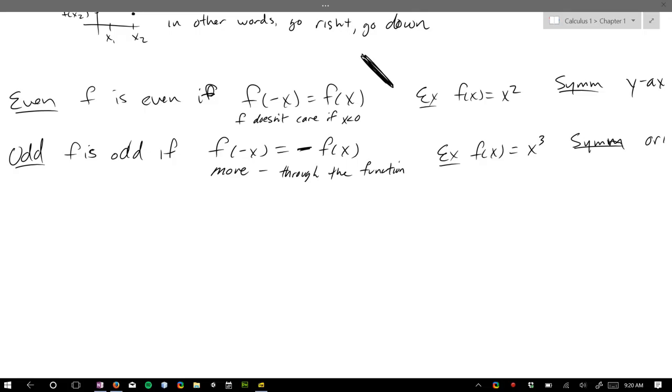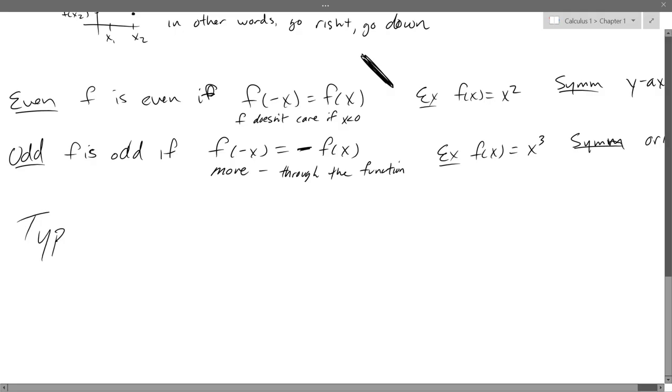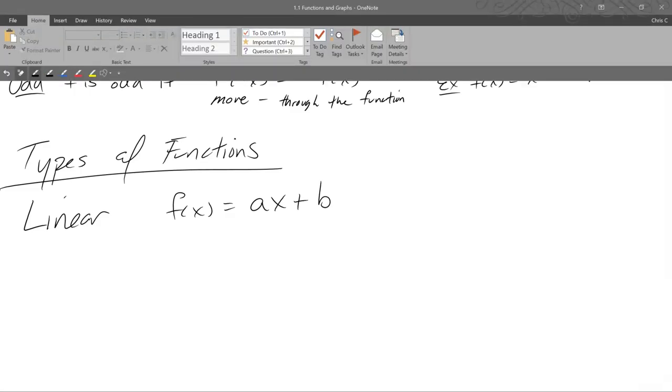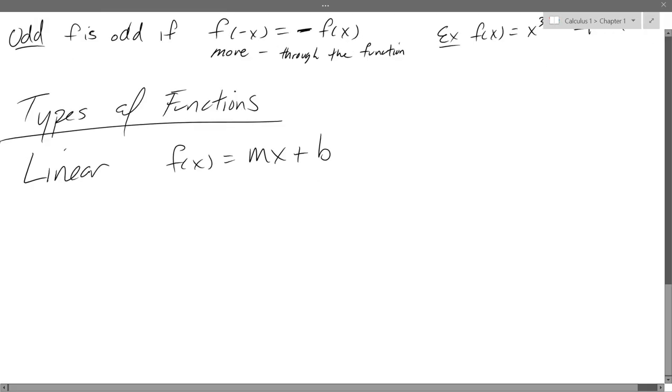So we left off even odd properties. Now we're going to talk about types of functions. We're going to just name a whole lot of types of functions. So we'll start out linear. A lot of you want to use mx plus b, so I'll use that letter so you're happy. mx plus b. All right, there's linear.